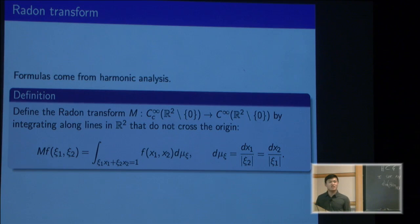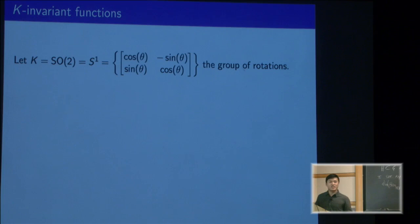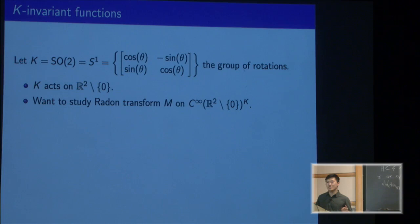This defines this operator which takes functions on the punctured plane to the punctured plane itself. To get nice formulas, we're only going to consider functions that are rotation invariant. K is going to denote the compact group of rotations. This acts on the punctured plane, and we're only going to look at these functions.